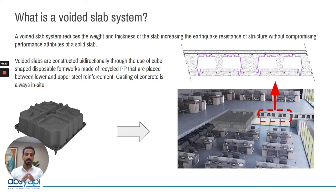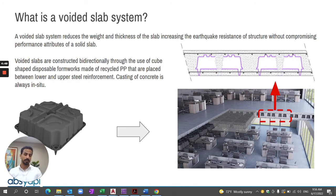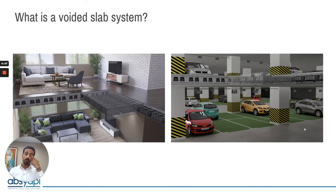When you reduce the slab self-weight and reflect this in the vertical elements and in the foundation, you will reduce the total weight of the structure compared with alternative solutions like solid slab or flat slab. With Volimax you also gain engineering and architectural benefits — for example, you can achieve spans of 20 by 20 meters, giving architects freedom for design, and it will also be flexible on the job site.